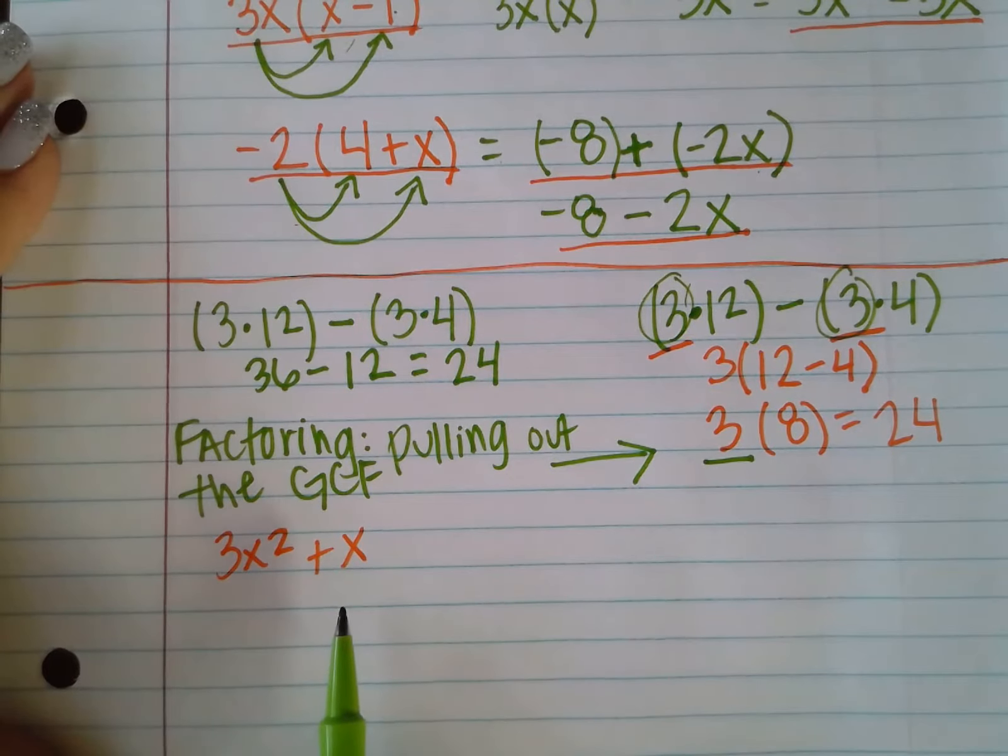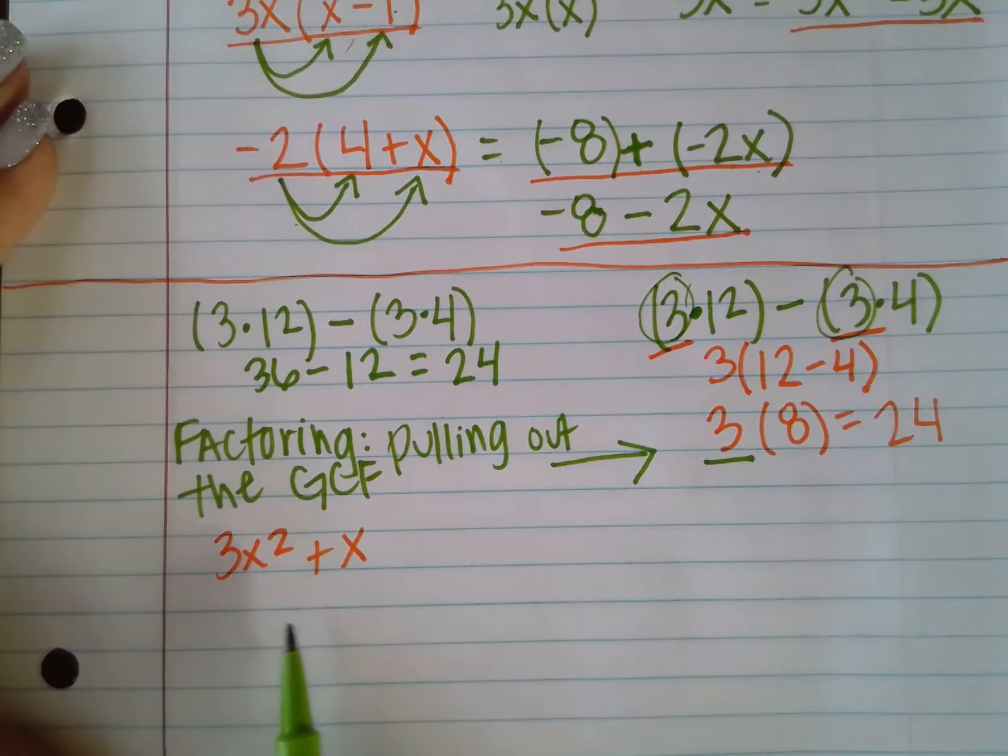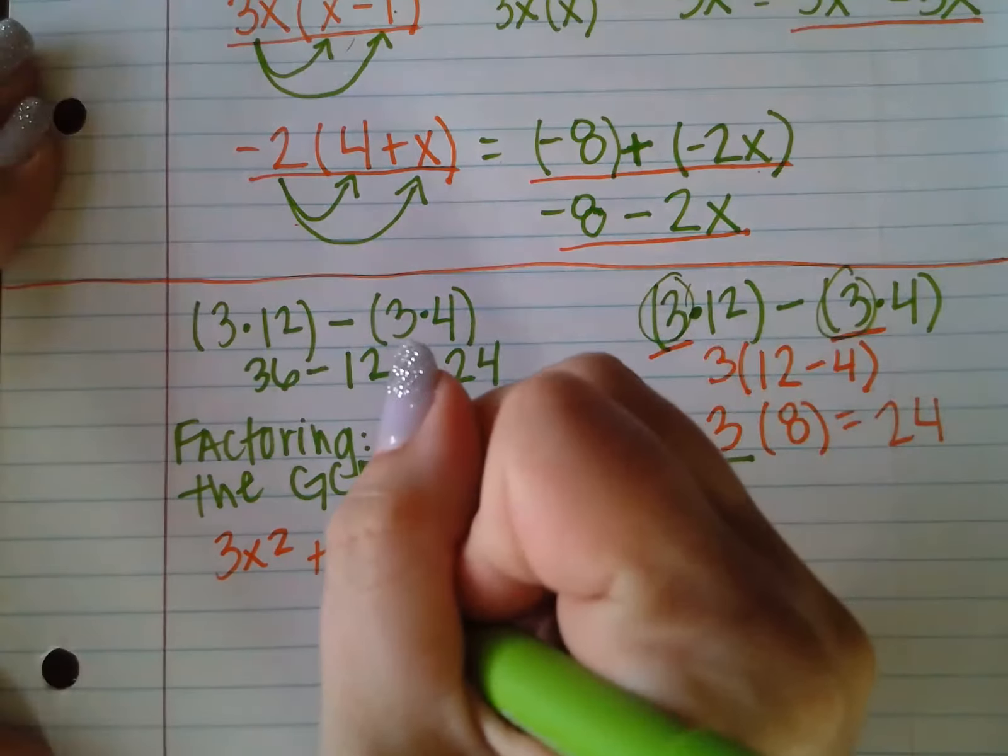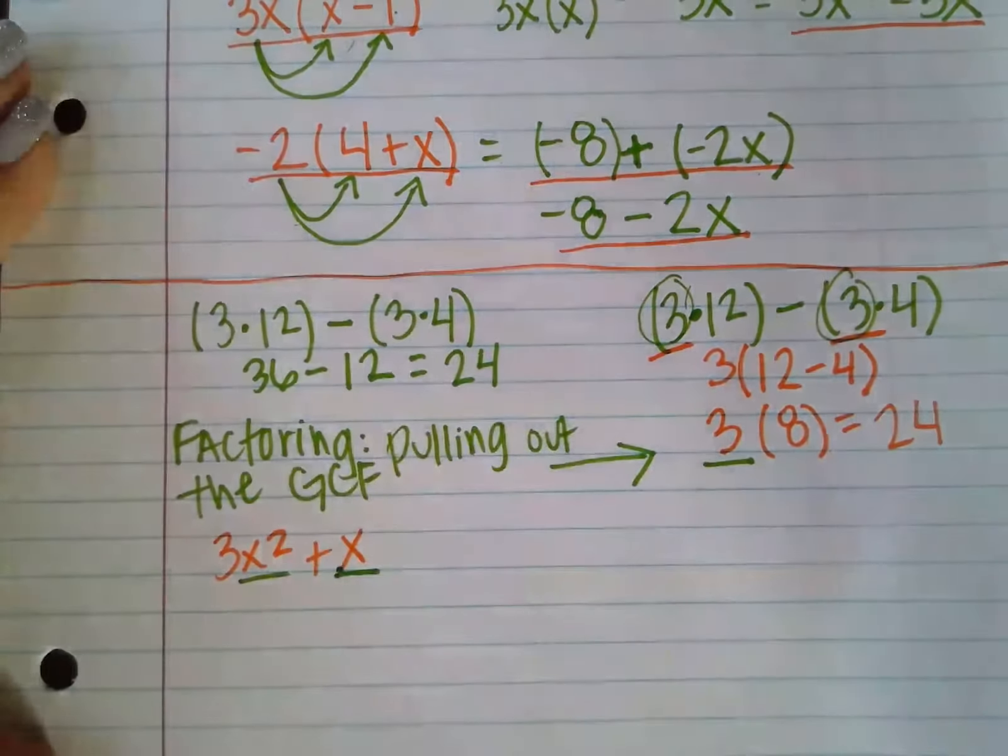So if I look between the two terms, they don't really share any numbers. This one is 3 times x squared, and this one is just x by itself. But they do share this factor of an x. Both terms contain an x.